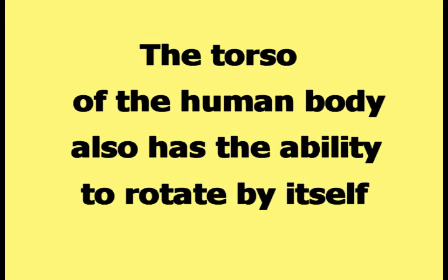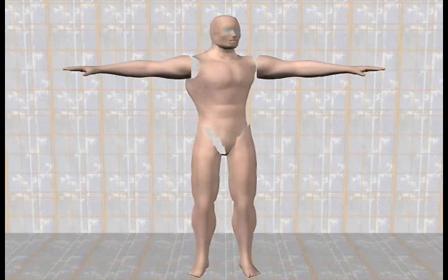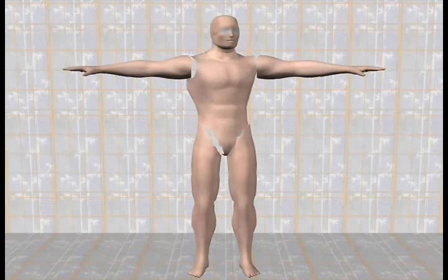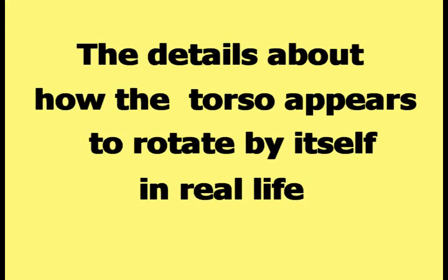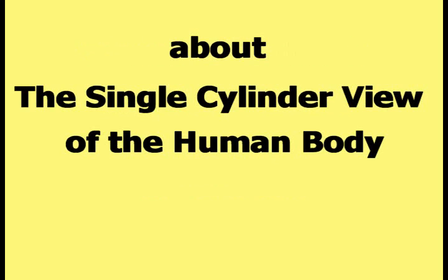The torso of the human body also has the ability to rotate by itself. This animation has completely separated the arms and the legs from the torso for clarity in demonstrating the torso rotating by itself. The details about how the torso appears to rotate by itself in real life will be explained in future videos about the single cylinder view of the human body.